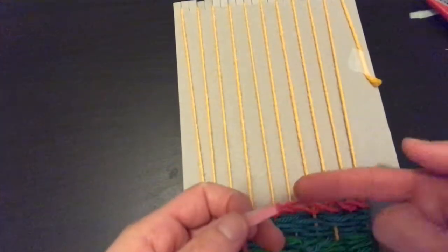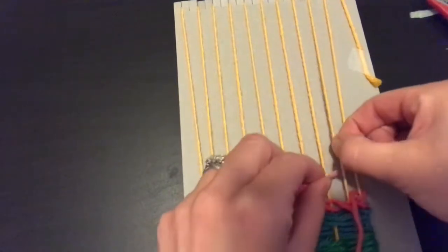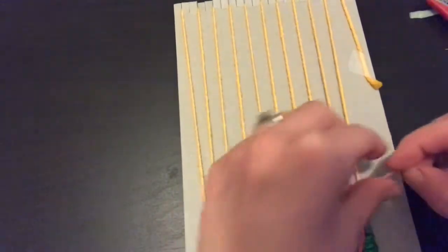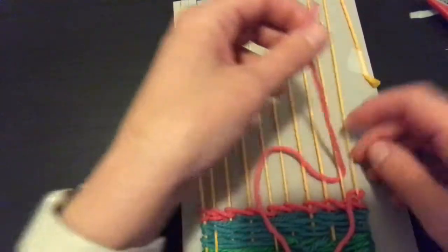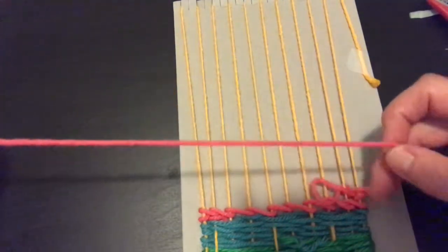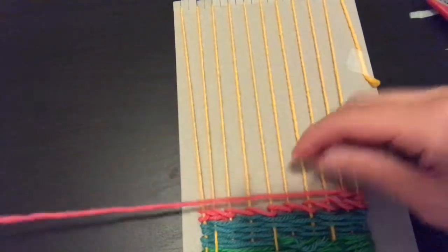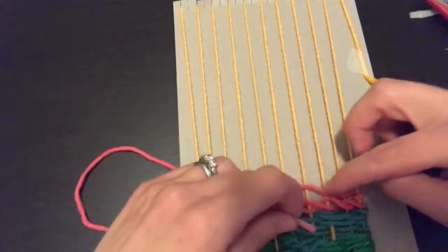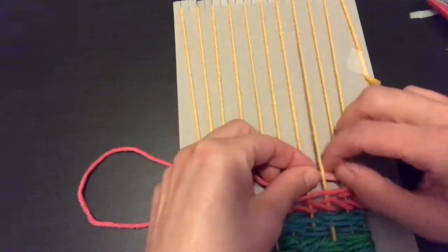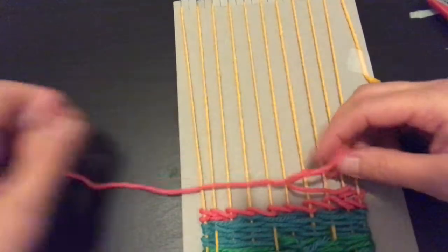Now my yarn is facing this direction. So I'm gonna go behind this one, make a loop of yarn around the yellow, and then cross over, go behind, and pull it around.